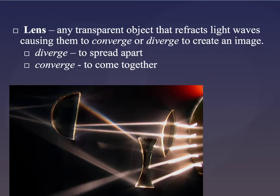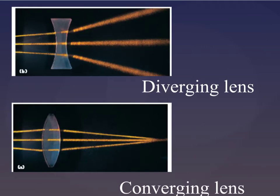First, the lens is just any transparent object that refracts light waves causing them to converge or diverge to create an image. So the word diverge means to spread apart. You can see this lens here causes the light to bend out in different directions. And converge means to come together. So here these light rays are coming together. Looking at it more closely, this is a diverging lens because all the rays go apart, and this is a converging lens because all the rays come together.